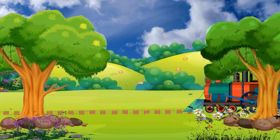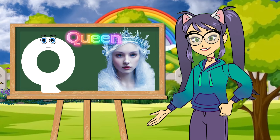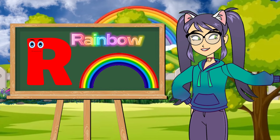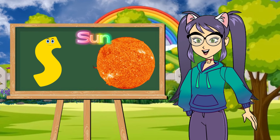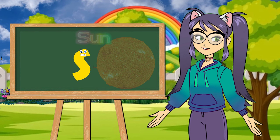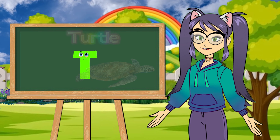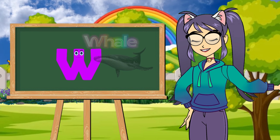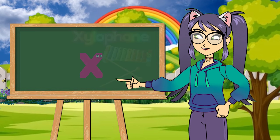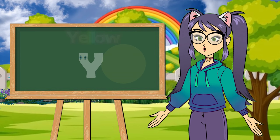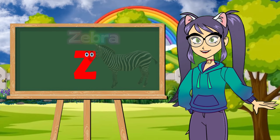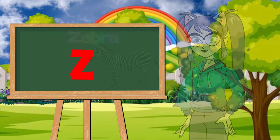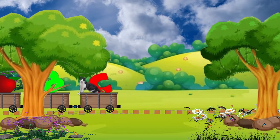M is for monkey. M, M, monkey. N is for nest. N, N, N, nest. O is for octopus. O, octopus. P is for penguin. P, penguin. Q is for queen. R is for rainbow. R, R, rainbow. S is for sun. S, S, sun. T is for turtle. T, T, turtle. U is for umbrella. O, umbrella. V is for violin. V, violin. W is for whale. X is for xylophone. C, xylophone. Y is for yellow. Y, Y, yellow. Z is for zebra. S, zebra.